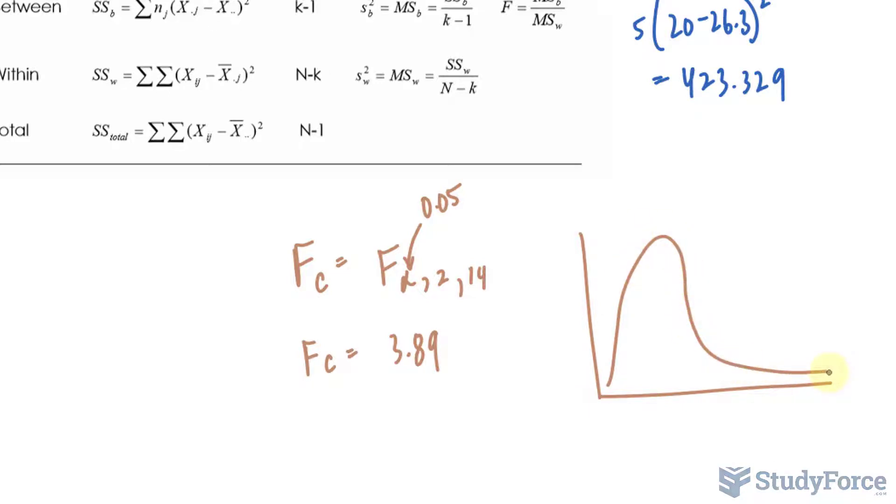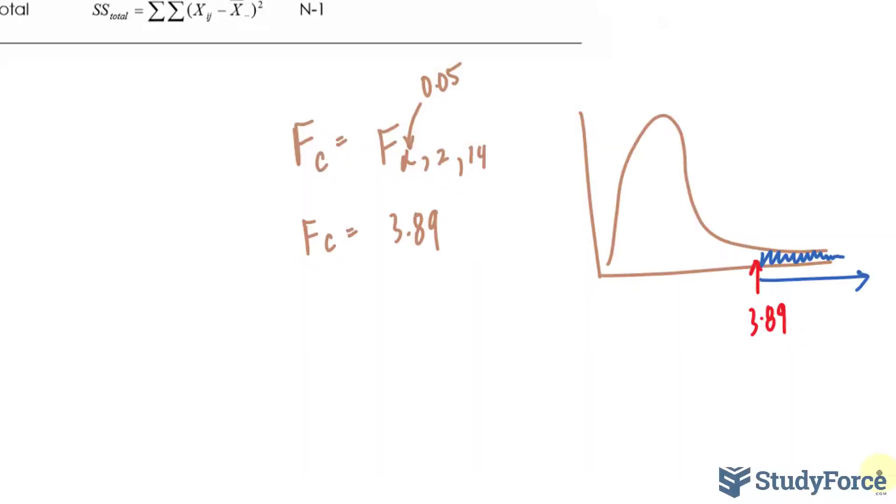The F distribution looks like this. It takes on this pattern. 3.89, let's say, is over here. The value that we found for F observed was 10.15, and that goes well beyond the right of 3.89, this way. Therefore, F critical is less than F observed. And if the F critical is less than the F observed, then it falls in the rejection region, so we reject the null hypothesis.